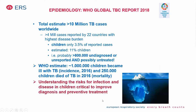Understanding this epidemiology and natural history is essential to develop the best prevention and treatment strategies worldwide. It is estimated that there are more than 10 million tuberculosis cases globally. A very small minority is reported in children, and almost a million children are undiagnosed, unreported, and possibly untreated. An estimated 250,000 children still die of tuberculosis, as recorded in 2016.